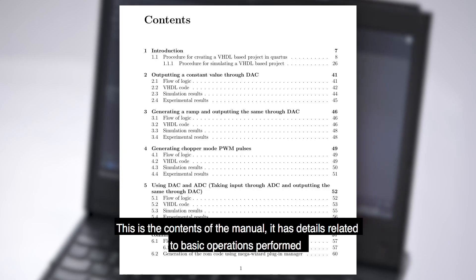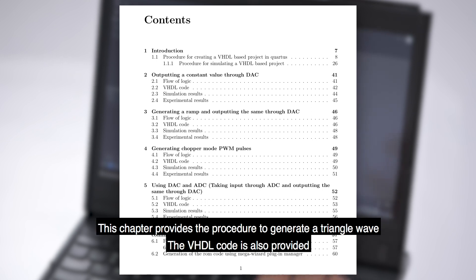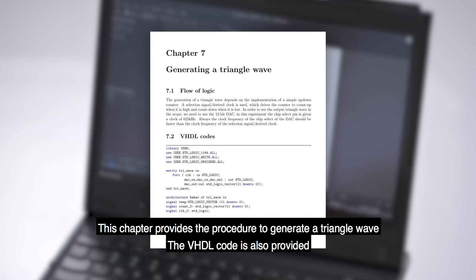This is the contents of the manual. It has details related to basic operations such as generation of PWM pulses and also means to generate a sine wave. In this chapter, the procedure to generate a triangle wave is provided.